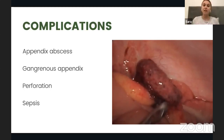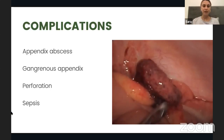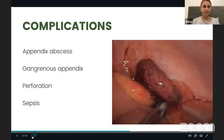Some complications we need to suspect include gangrenous appendix, appendiceal abscesses, perforation, and sepsis. These are especially relevant in delayed presentations, which are more common in children — where symptoms can be non-specific — as well as in pregnant women and elderly people, who are at higher risk of developing complications before the diagnosis is made.